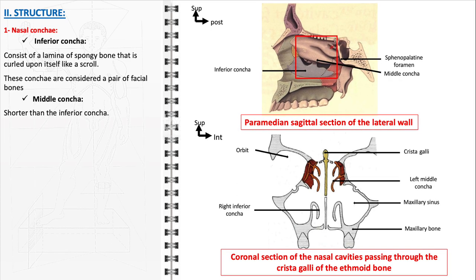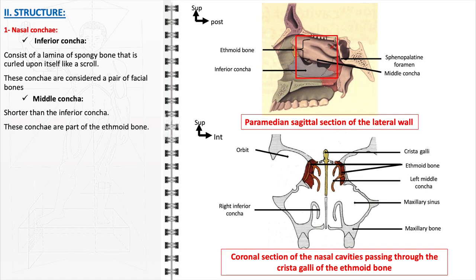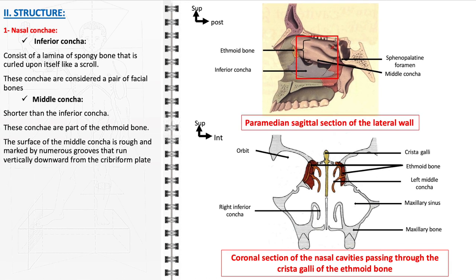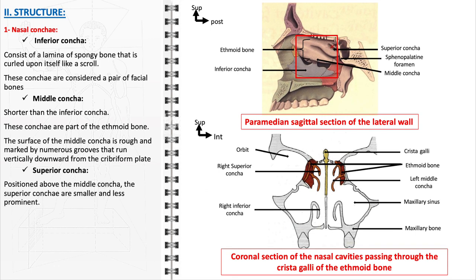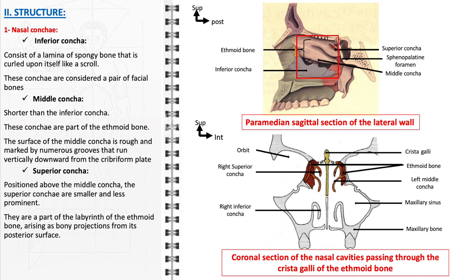The middle concha is shorter than the inferior concha. Unlike the inferior concha, these are not separate bones but are part of the ethmoid bone. The surface of the middle concha is rough and marked by numerous grooves that run vertically downward from the cribriform plate; these grooves house branches of the olfactory nerves, which distribute to the mucous membrane covering the superior nasal concha. Positioned above the middle concha, the superior conchi are smaller and less prominent, arising as bony projections from the posterior surface of the ethmoid labyrinth. The middle and superior conchi are closely associated with the olfactory system and aid in directing airflow to the olfactory receptors.